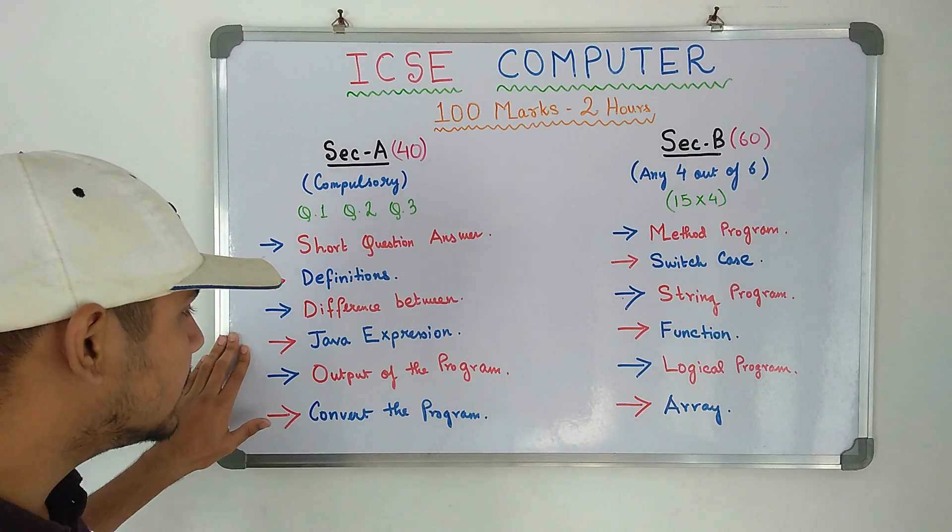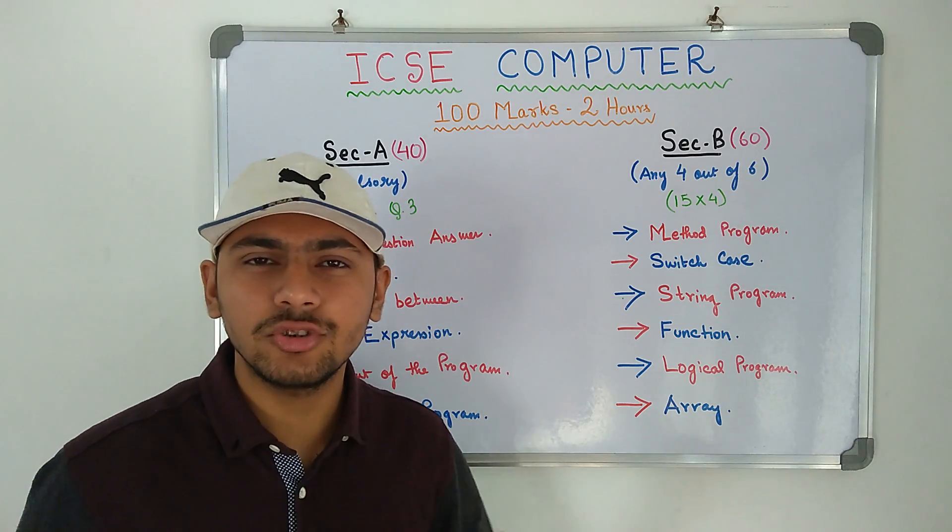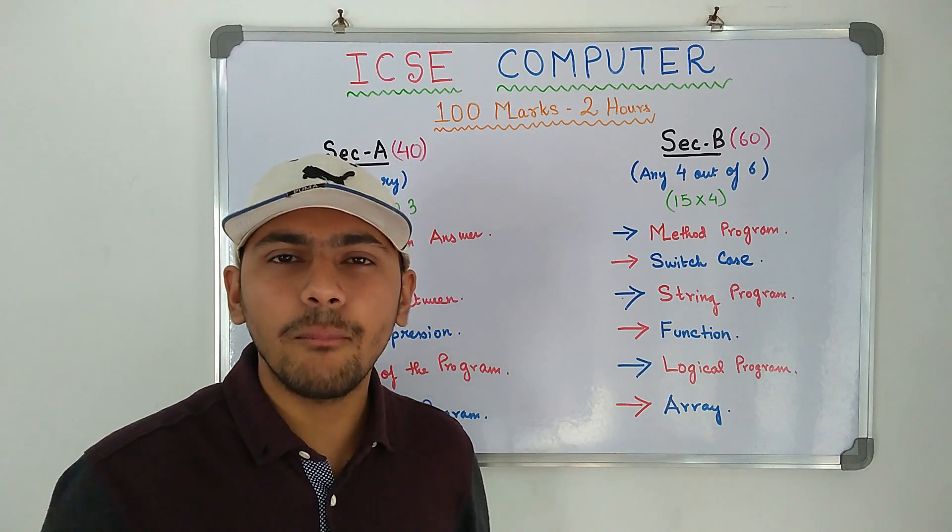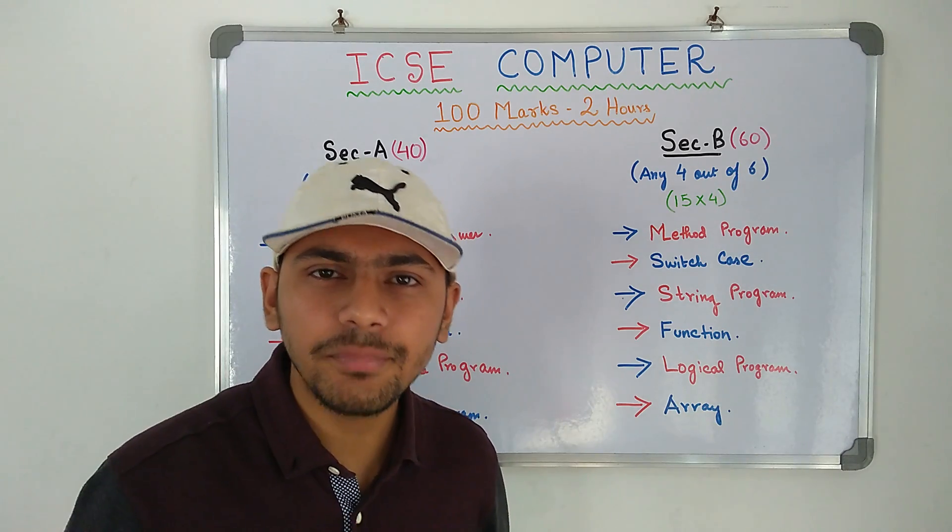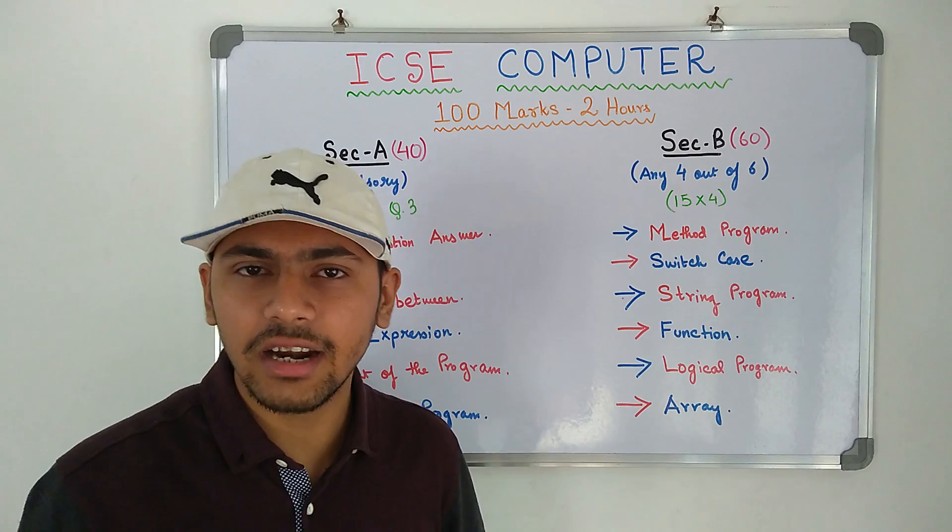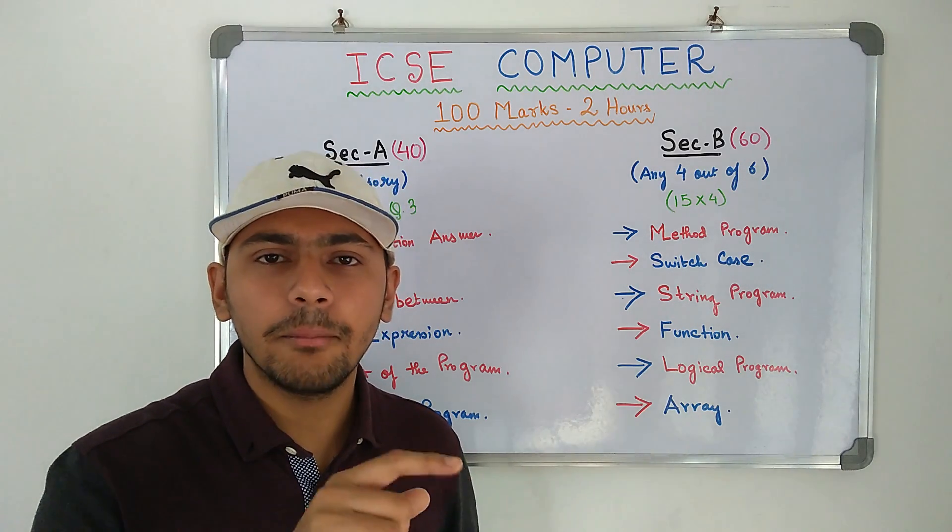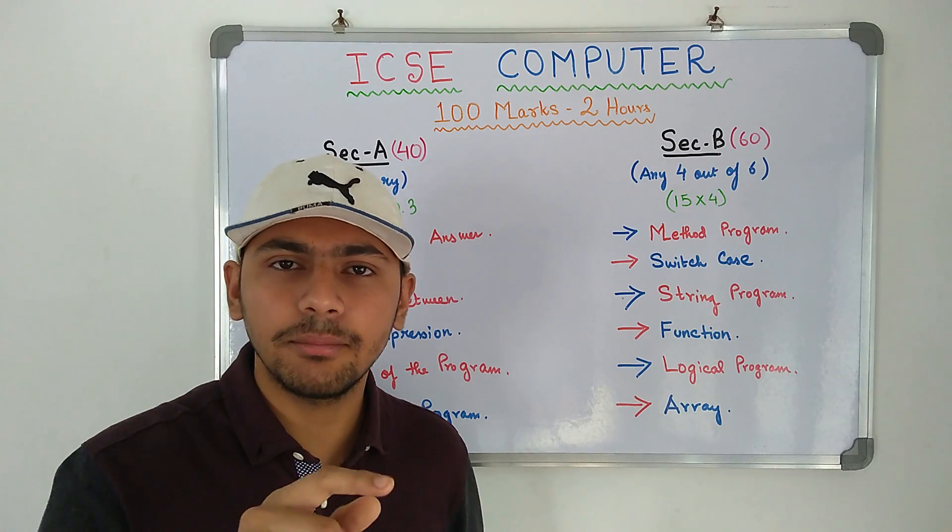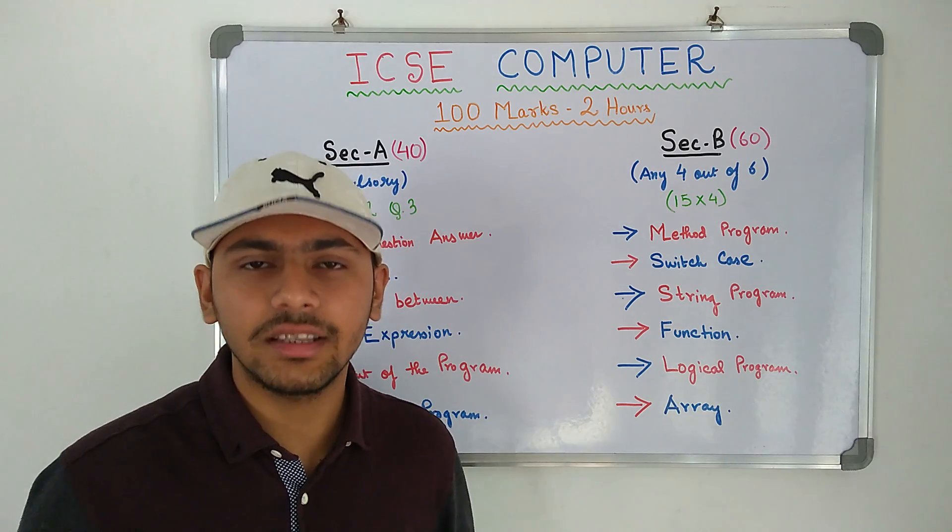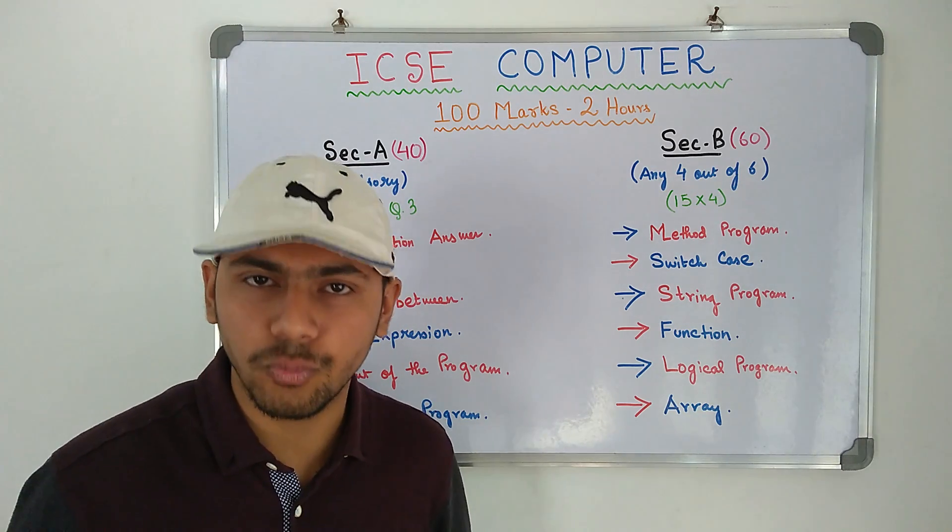Then you have Java Expression. Java Expression means two things. First of all, a mathematical formula will be given and you have to write the expression for that formula. And number 2, an equation type of thing will be given plus y minus minus plus y minus plus plus y, a thing of that sort and you have to give the output.